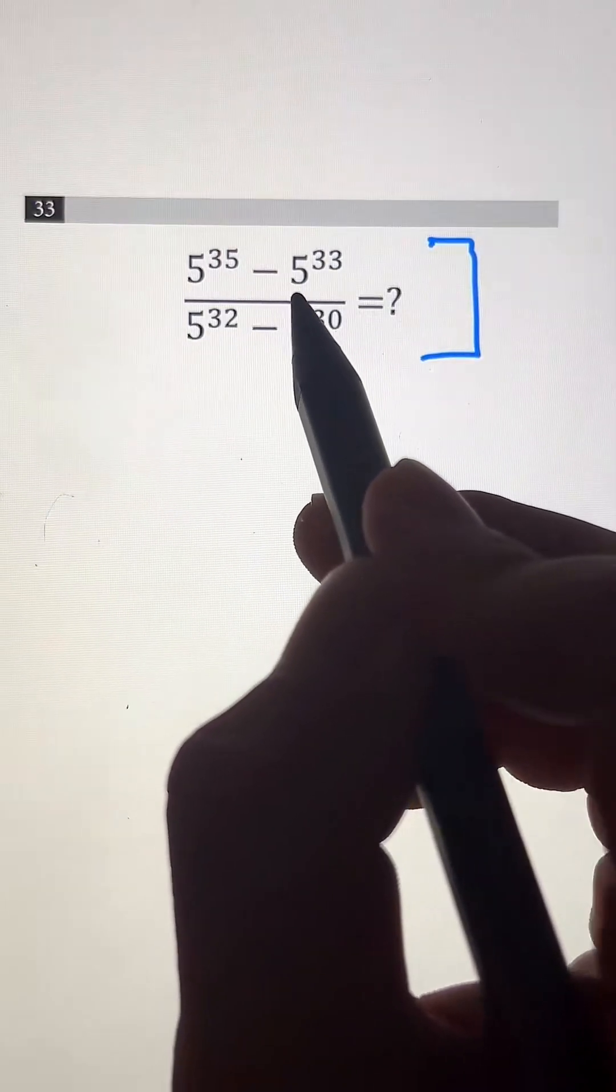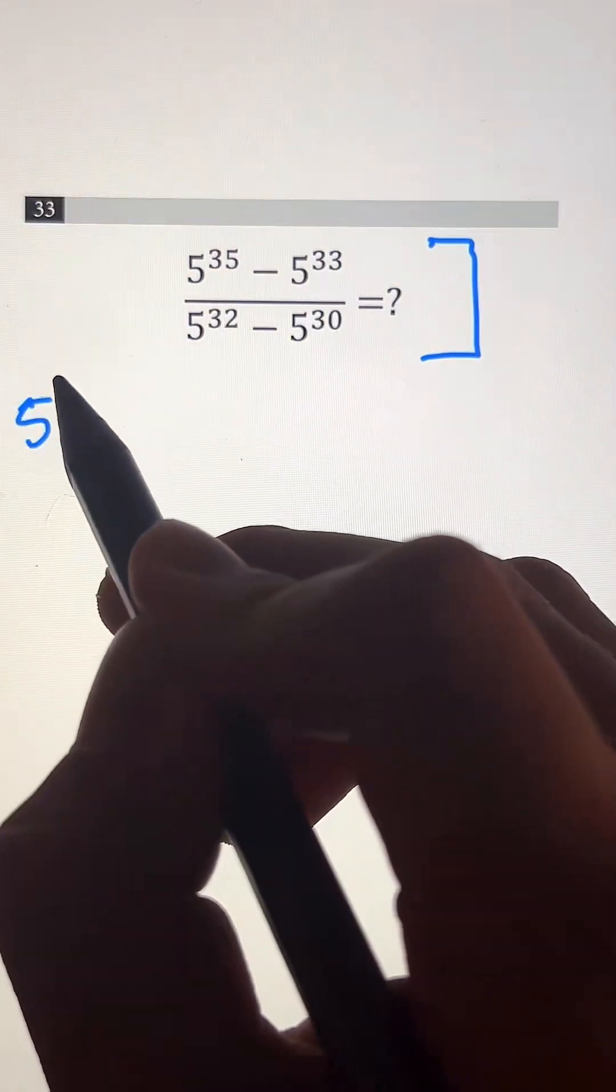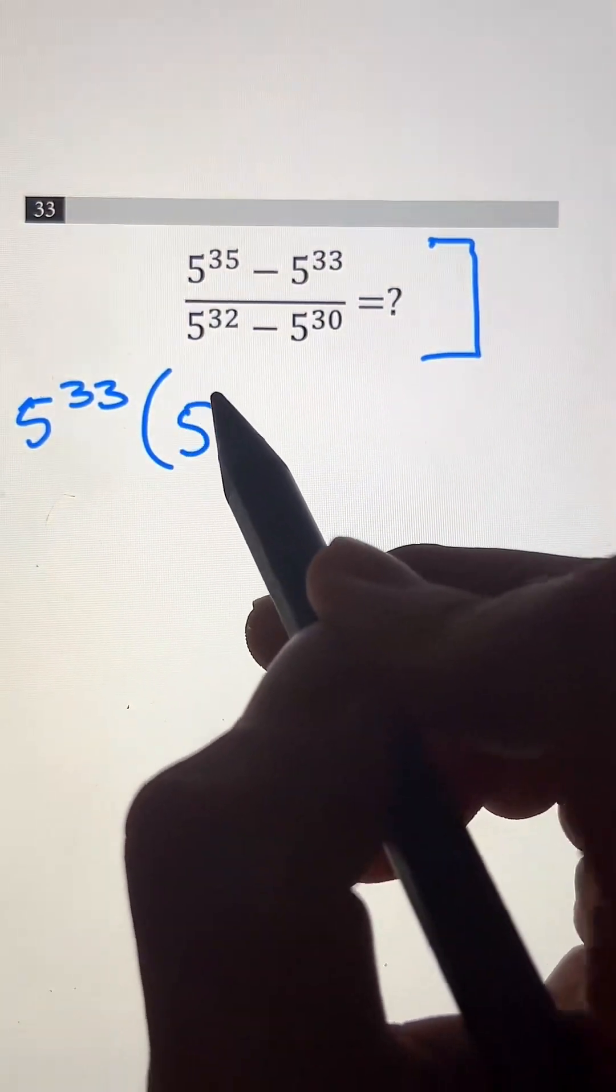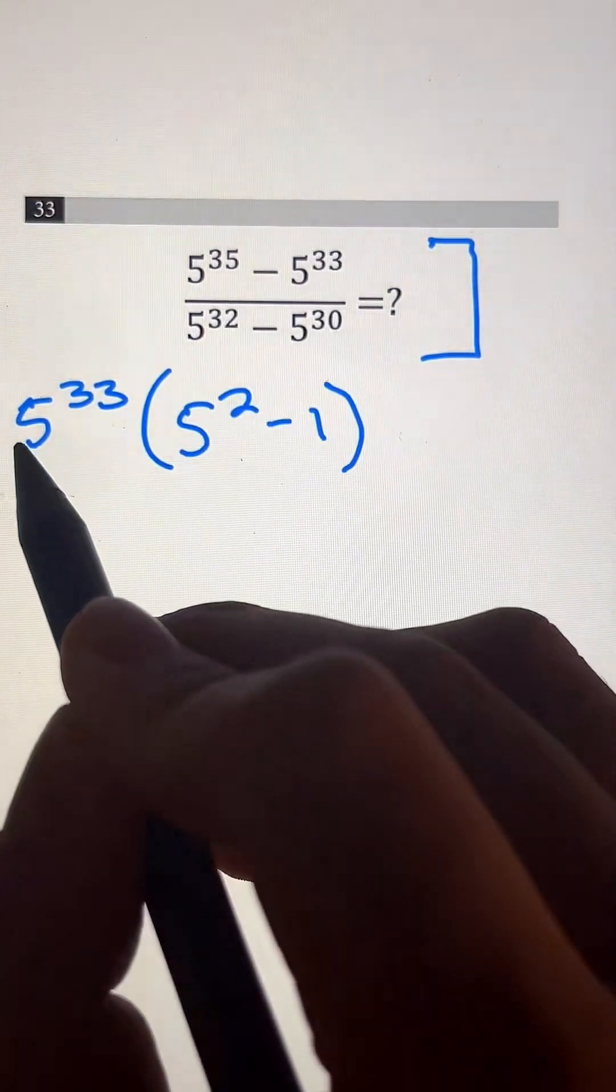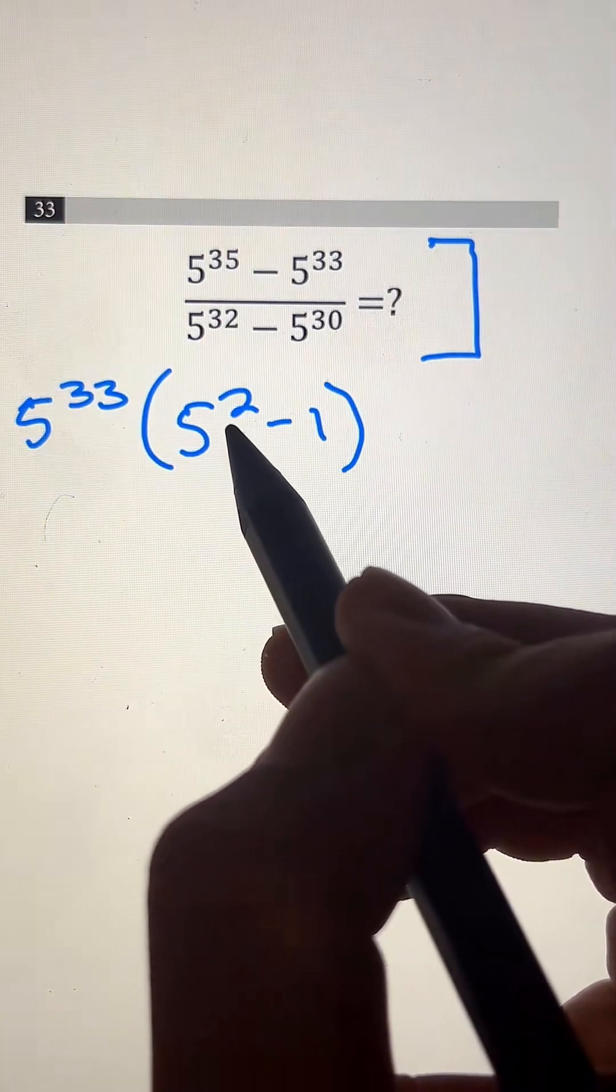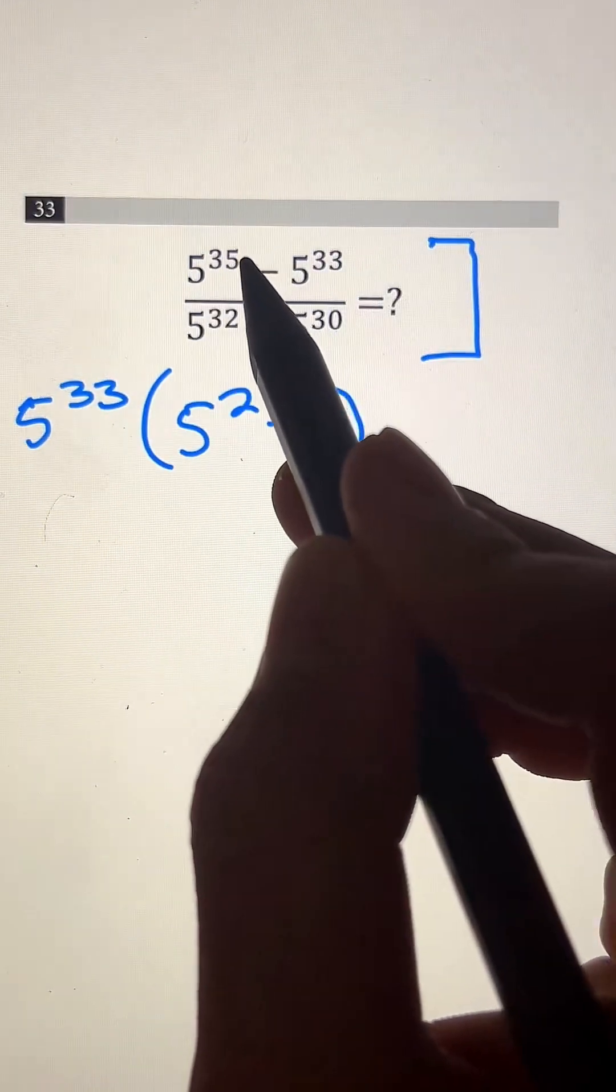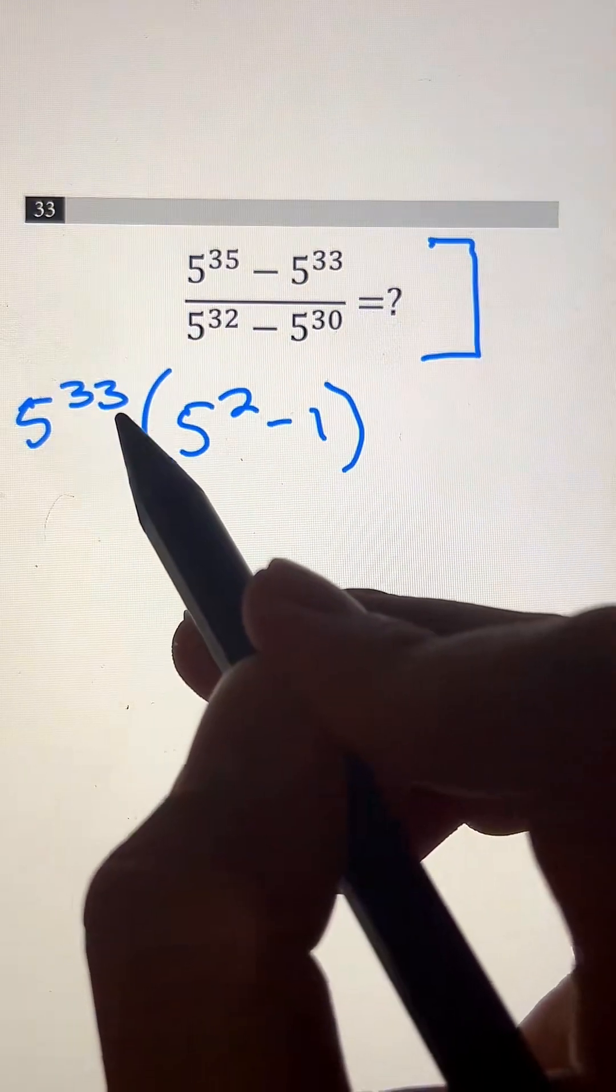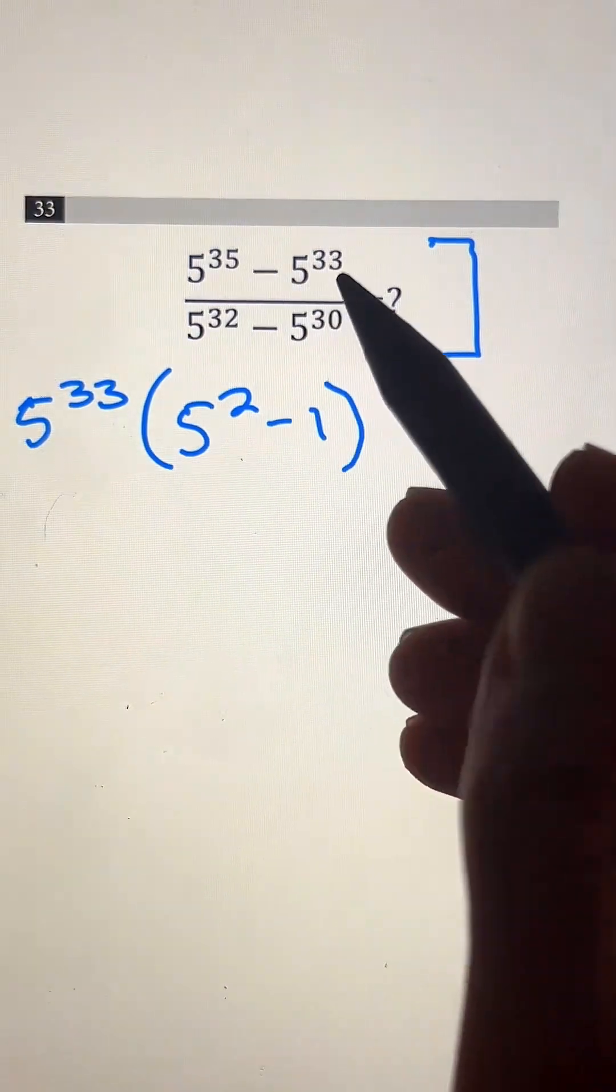So 5 to the 35th power minus 5 to the 33rd power, we can factor out 5 to the 33rd. On the inside, we have 5 to the 2nd minus 1, because 5 to the 33rd times 5 to the 2nd is just going to be 5 to the 33rd plus 2 or 5 to the 35, and negative 1 times 5 to the 33rd will give us negative 5 to the 33rd power.